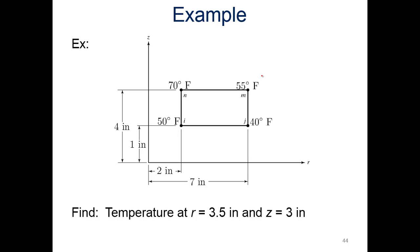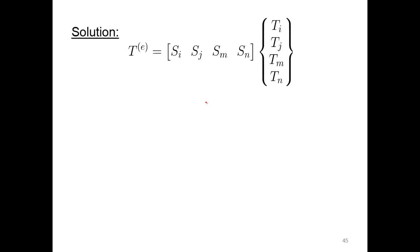Let's run this as an example. We have the overall coordinate system of R and Z, nodes I, J, M, and N. We have temperatures defined at the nodes. We want to find the temperature at R equal to 3.5 inches - so R equals 2 and R equals 7, so 3.5 is right in here. Z equals 3, so somewhere up in here. We want to find the temperature right around this area.